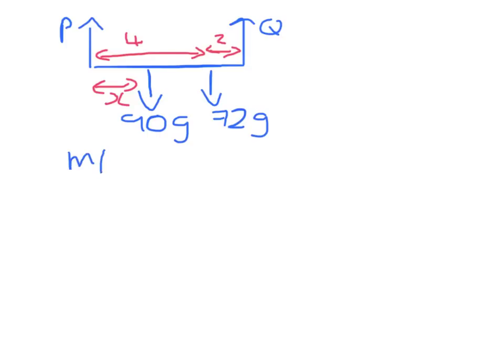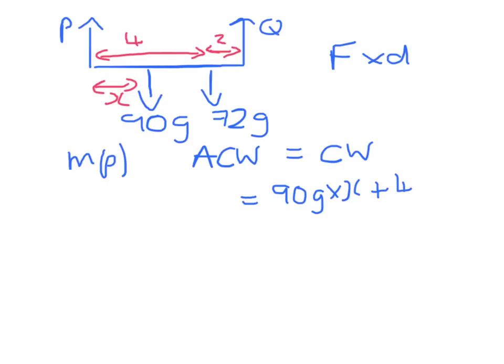Taking moments about P. Anticlockwise moments have to equal clockwise moments. The first force we have is the 90g. A moment is force times distance, so we have 90g times x. We then have the 72g, so that will be 4 times 72g, and the Q will be acting anticlockwise, so 6Q.